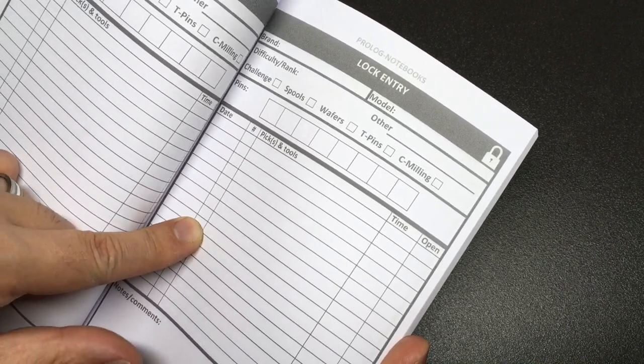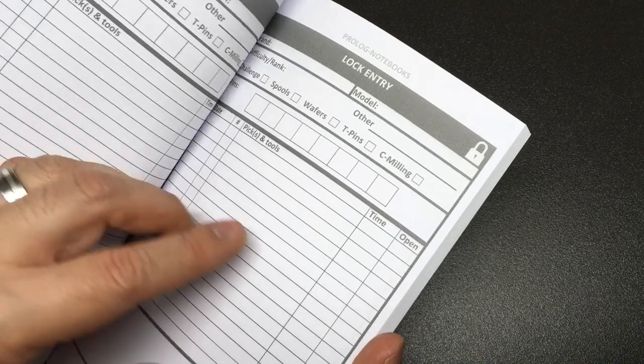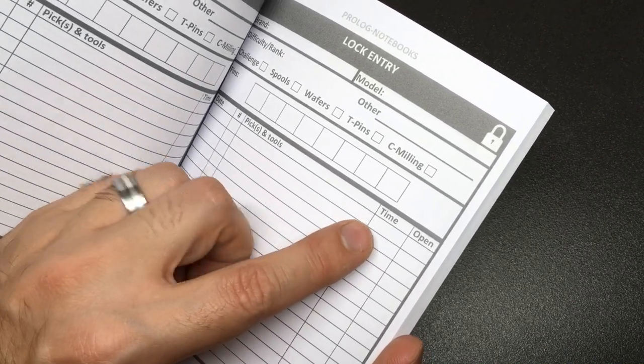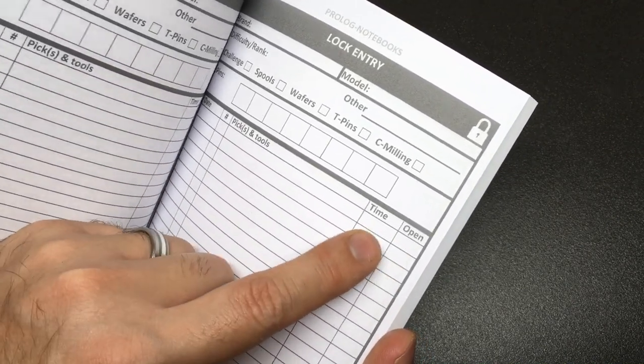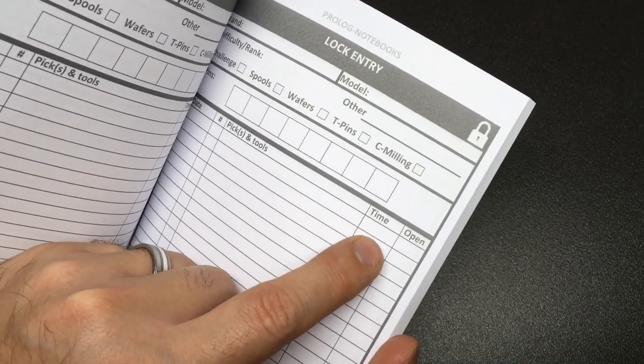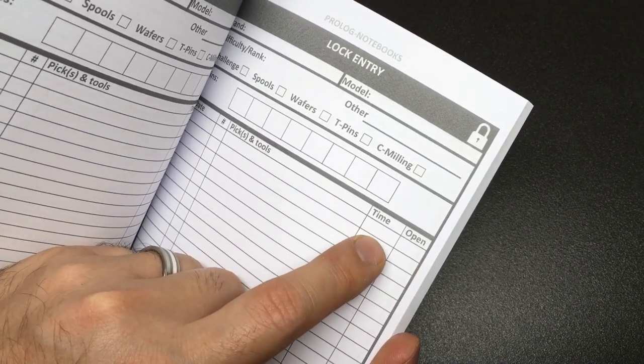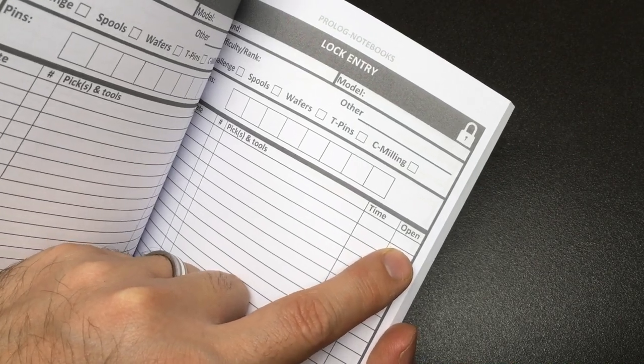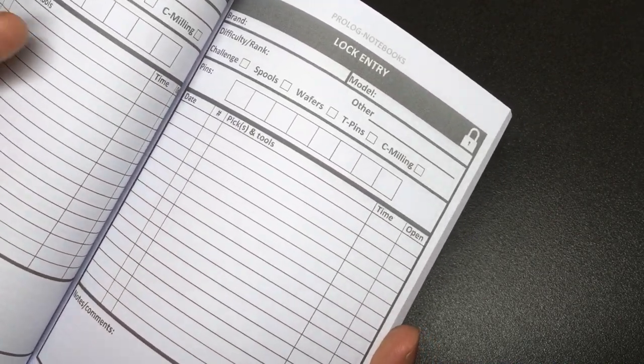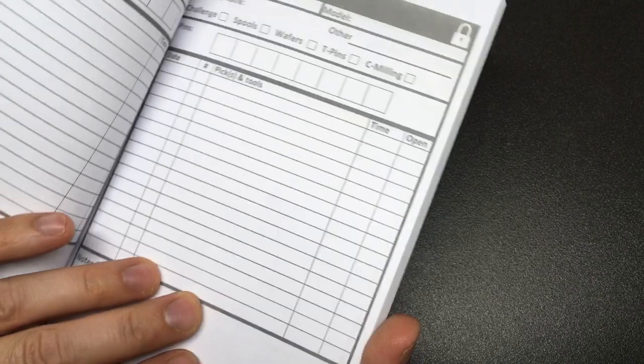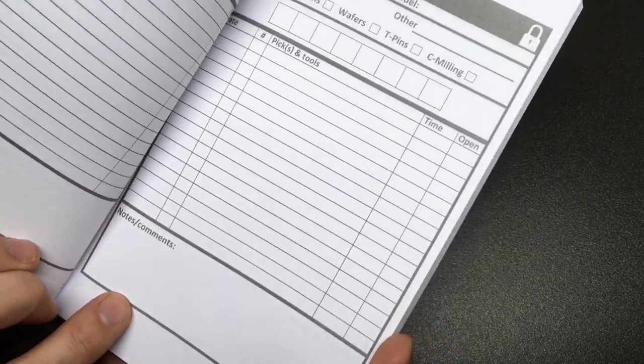And I say attempts, some people just like to log when they picked a lock, regardless of how many attempts it is. The time to open, if that is when you started or what time it's opened, or indeed how long it took and did you open it, tick, cross. There's a lot of room here to interpret these fields as you like. And of course, any notes and comments.